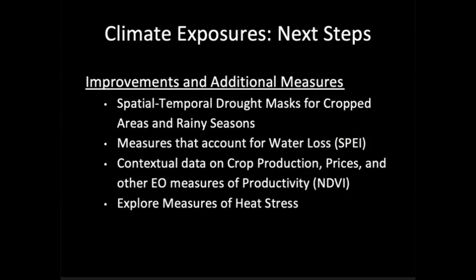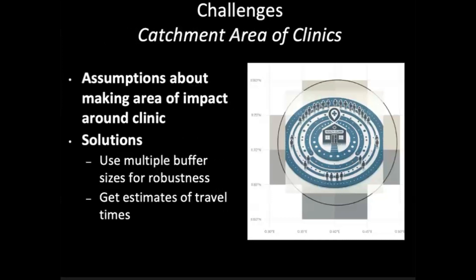In terms of next steps: we just have these raw measures of drought and extreme rainfall. I want to put some spatial and temporal masks — maybe only looking at drought in cropped areas or areas dependent on livestock or rain-fed agriculture, and focus more on rainy and growing season. There's also the SPEI — the Standardized Precipitation and Evapotranspiration Index — which accounts for how much water falls on the ground and then how much is lost to evaporation. There's also some contextual data on crop production prices, other EO measures of productivity like NDVI — Normalized Differential Vegetation Index — often a proxy for photosynthesis, and of course exploring measures of heat stress.